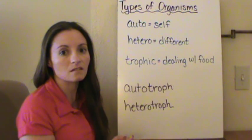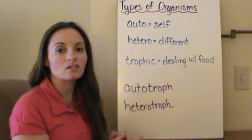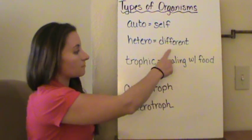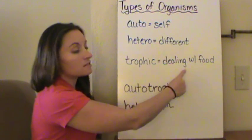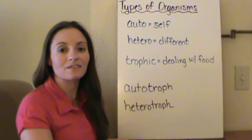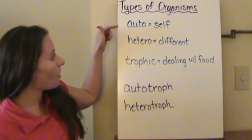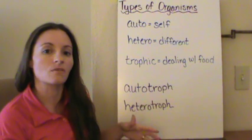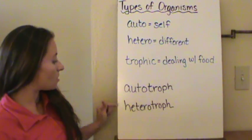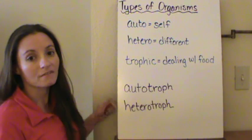Organisms that go through photosynthesis actually store that energy, and as they do that, they are storing it for heterotrophs. 'Hetero' meaning different, 'trophic' dealing with food — so a different food source. Organisms that have to get their food from a different food source. So autotrophs are self-feeding — those are the organisms that go through photosynthesis. And those that have to eat to get their energy are called heterotrophs. Autotrophs: self-feeding. Heterotrophs: have to eat their food.